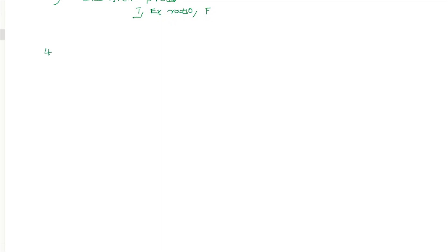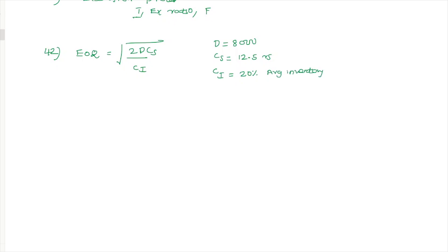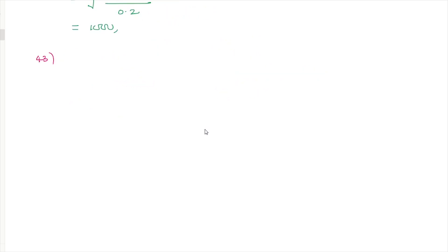The Economic Order Quantity (EOQ) formula is: EOQ = √(2 × D × Cs / Ca). With D = 8,000 units, Cs = 12.5 rupees, and Ca = 20% of average inventory at unit price of 1 rupee (i.e., Ca = 0.2), the EOQ is calculated accordingly. A 3-month moving average on 5 data points gives an answer of approximately 68.